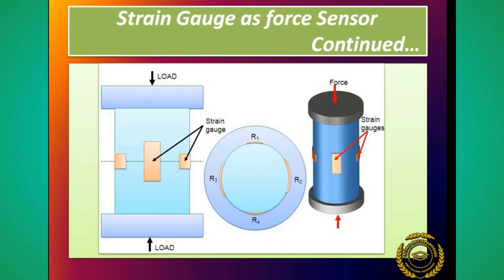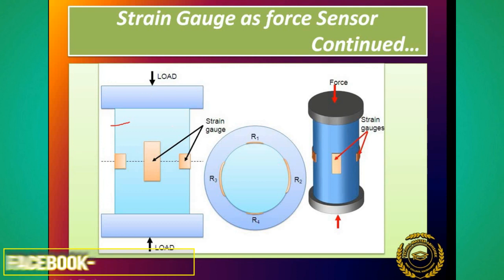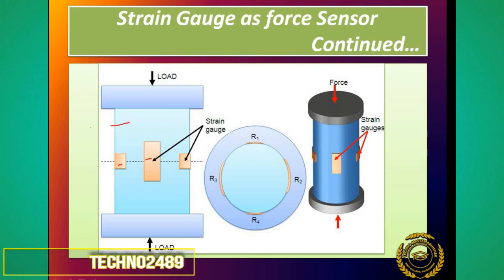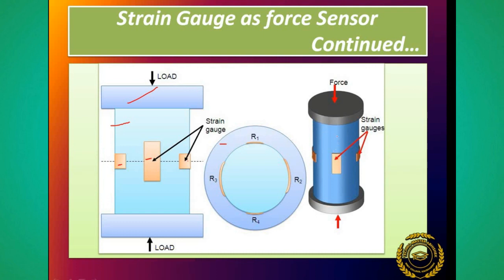This is the strain gauge element - this is the cylindrical tube, here we have a collar, and we have a compressive load. The strain gauge element is attached to the tube surface. This electrical resistance will change, and then we will measure how much force and load was applied. This is a front view and this is a top view of the strain gauge load cell arrangement.